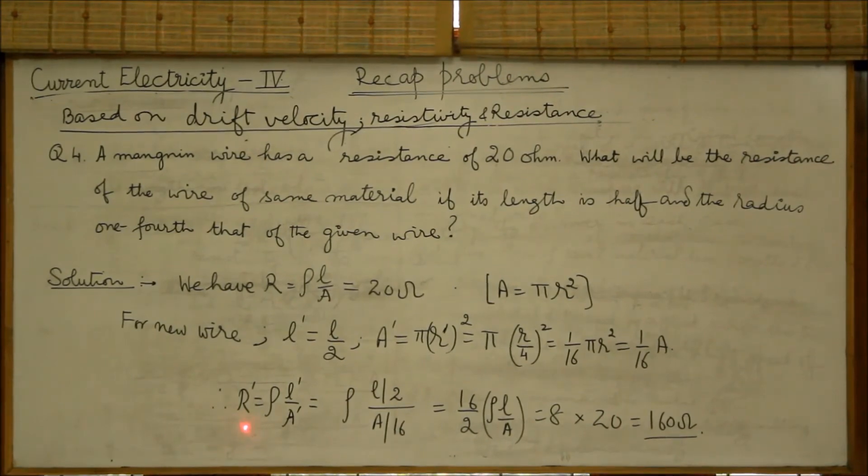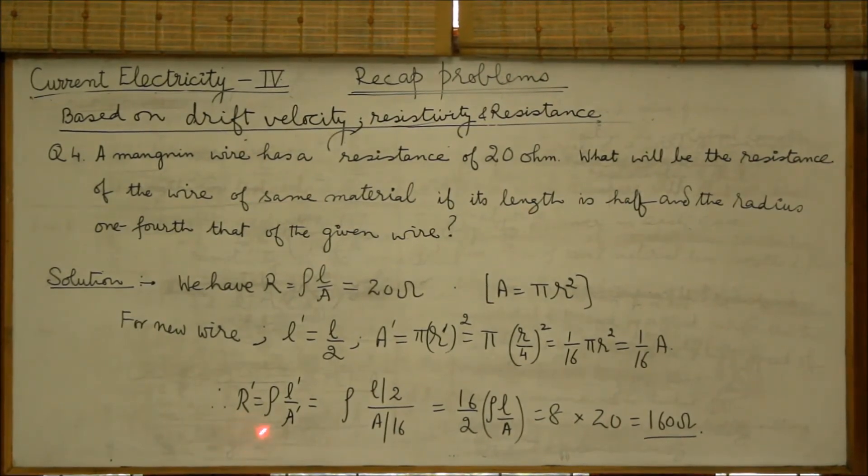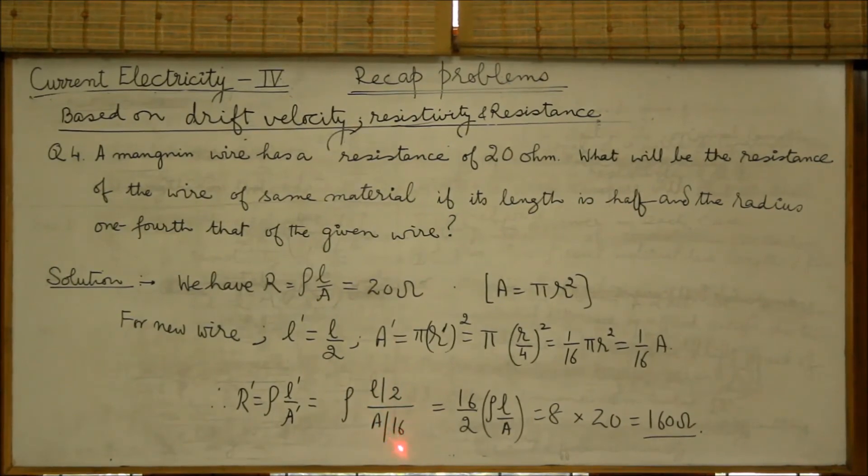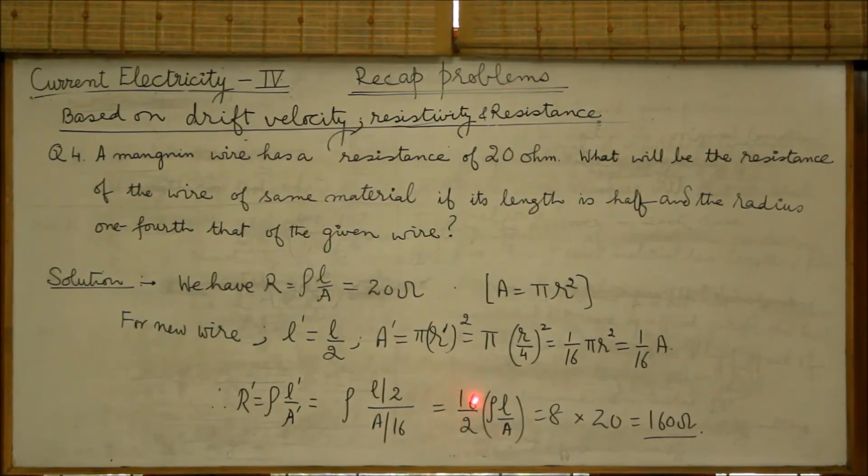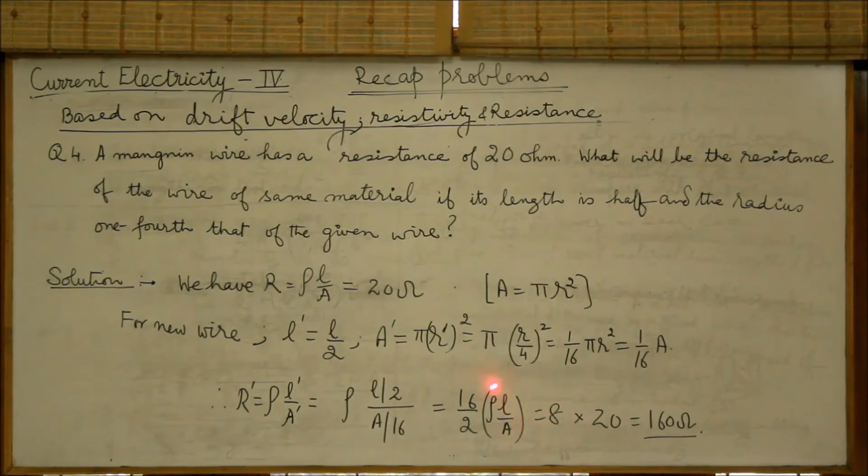Therefore, resistance of the new wire R dash will be rho L dash by A dash. Substituting for L dash and A dash, you get rho L by 2 over A by 16, or 16 by 2 rho L by A. Rho L by A is given to be 20 ohms. So, the resistance of the new wire will become 160 ohms.